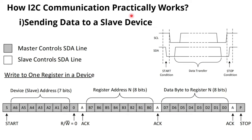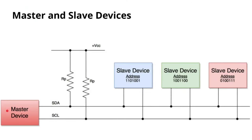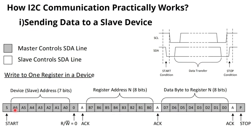Now we'll discuss how I2C communication practically works — sending data to a slave. First we send the startup sequence: SCL goes high to low, and during clock high, the SDA data line transitions from high to low. This represents the start condition. This sequence is sent to all slaves in the network.